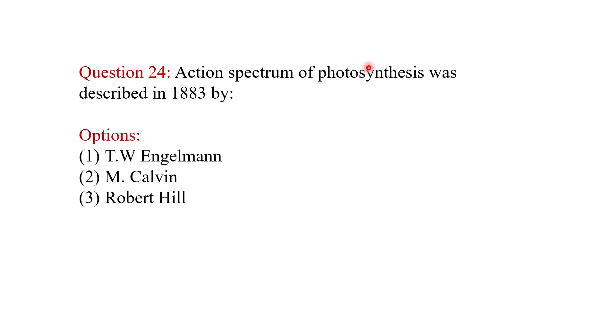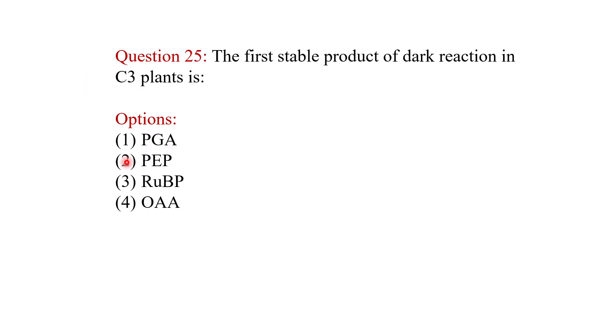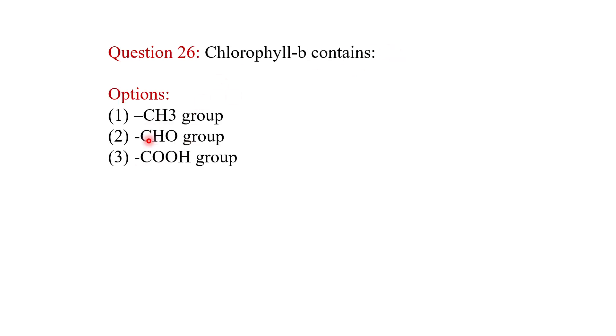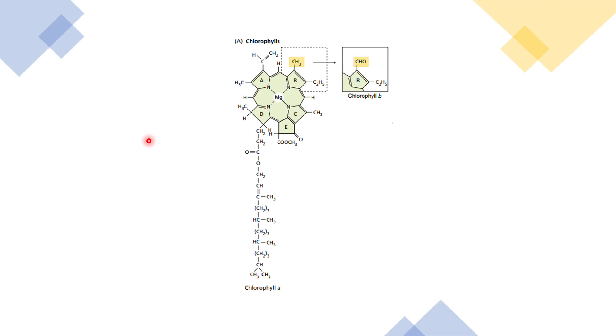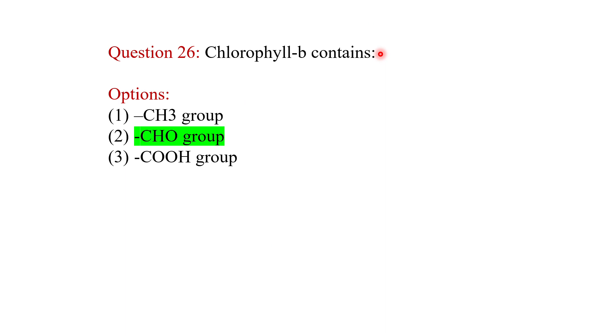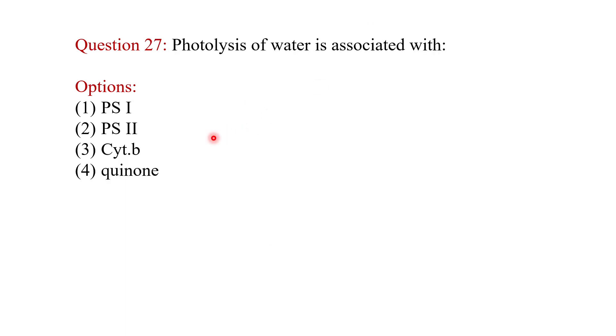Action spectrum of photosynthesis was described in 1883 by D.W. Engelmann. The first stable product of dark reaction in C3 plants is PGA or phosphoglyceric acid. Chlorophyll B contains an aldehyde group. So the answer will be aldehyde group.